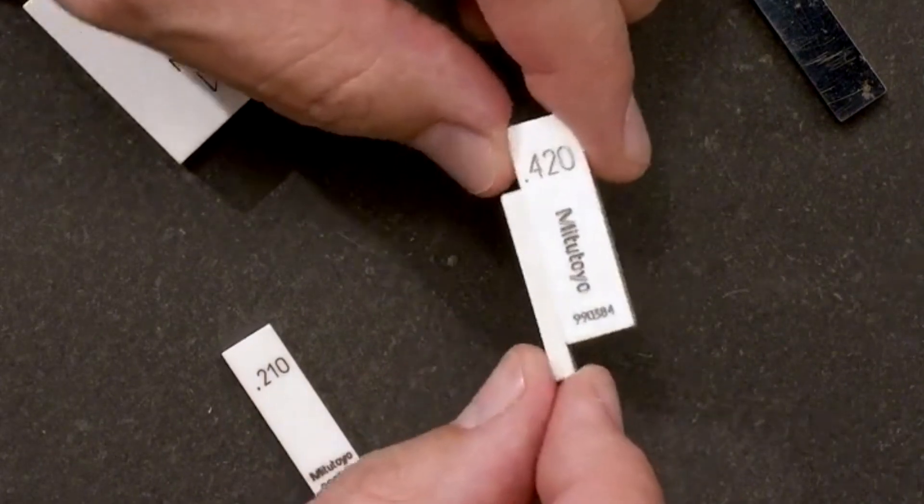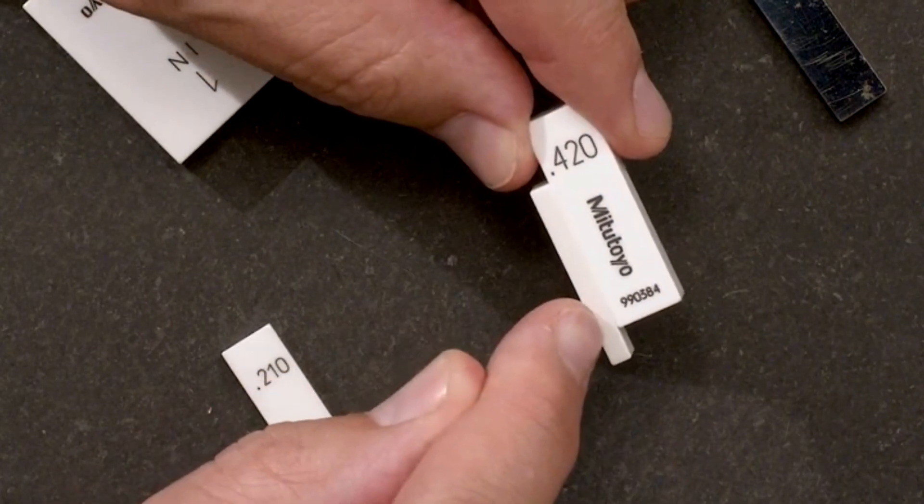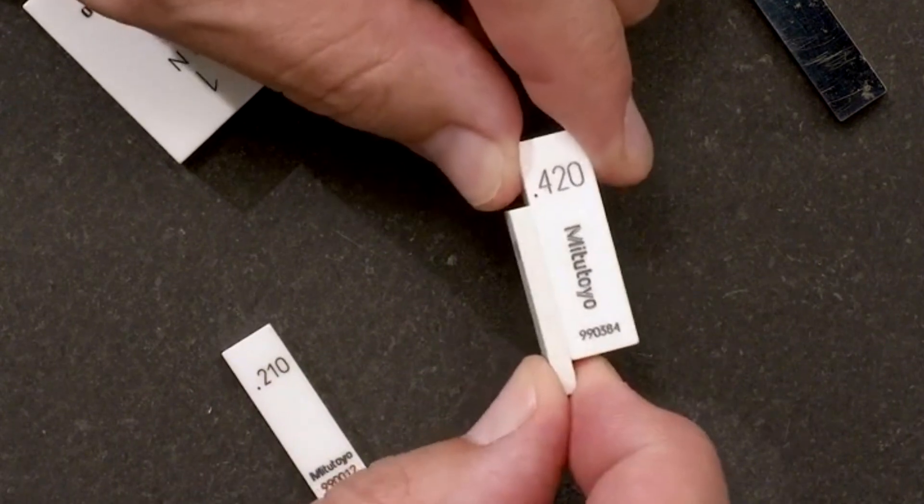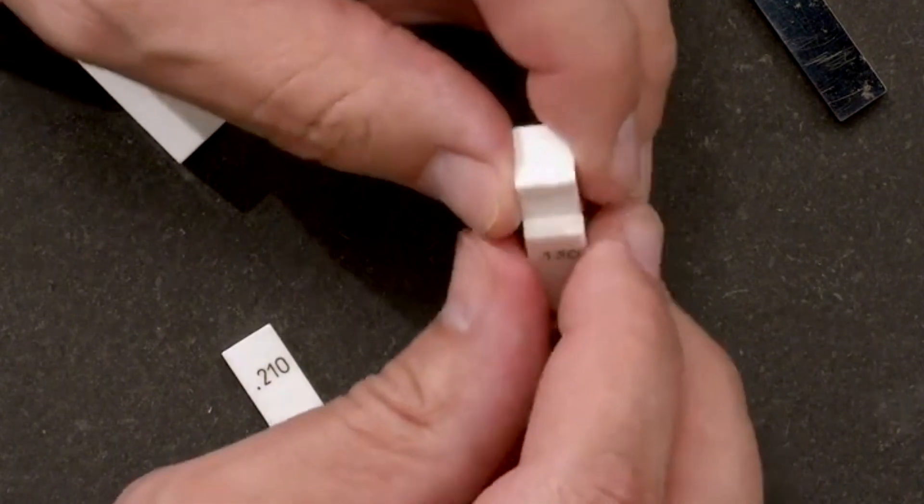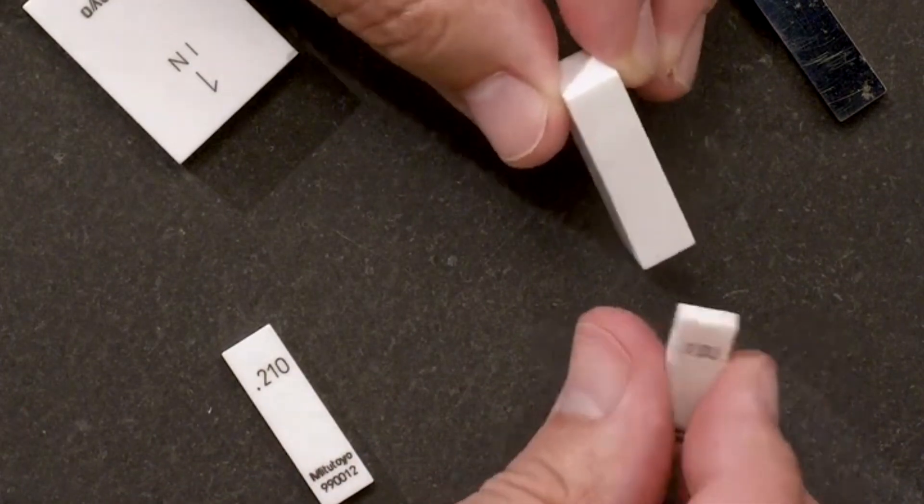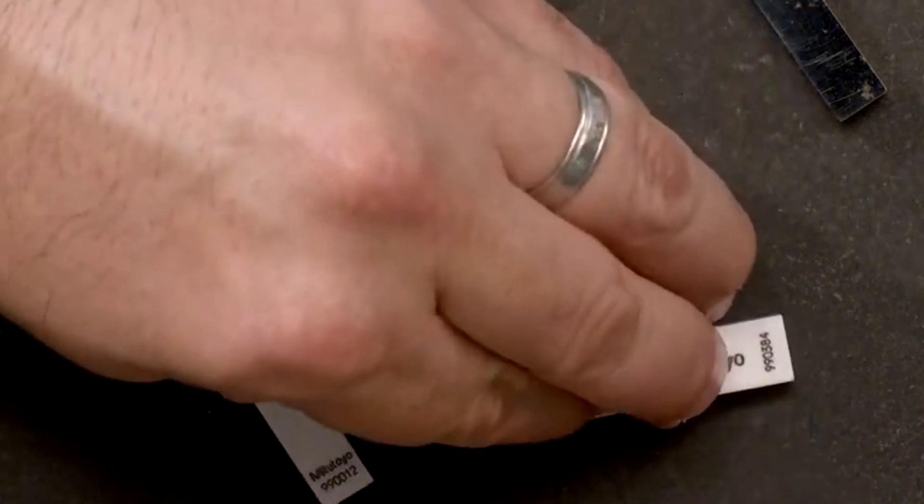When done properly, the gap between the two Gauge Blocks is somewhere around one millionth of an inch. And when you're done, they can be broken apart and reused over and over. And any flat or smooth surface will ring together.